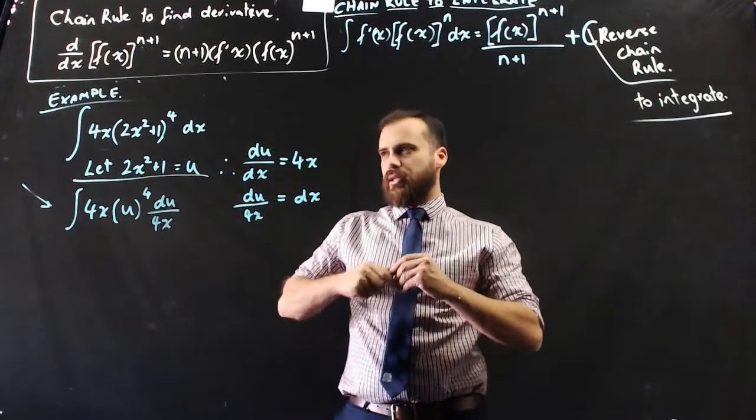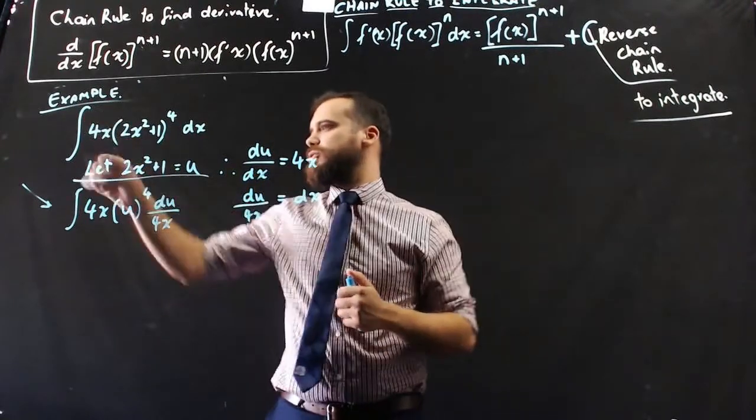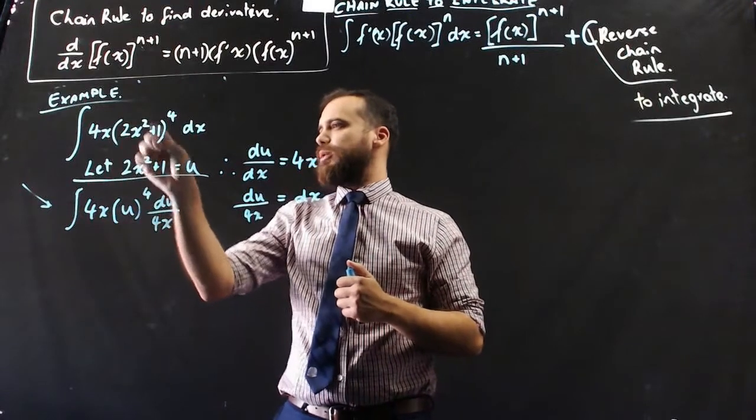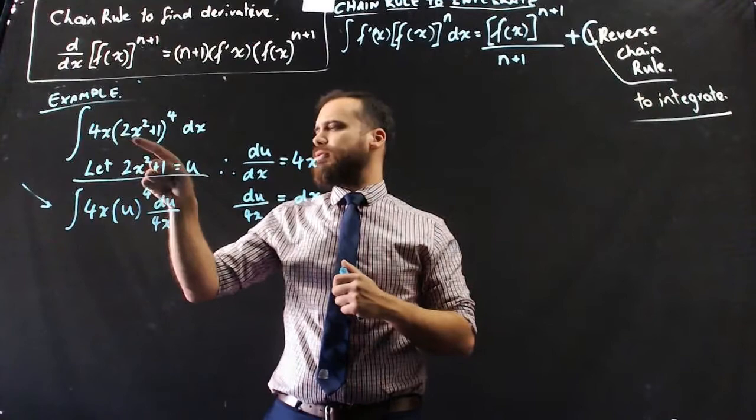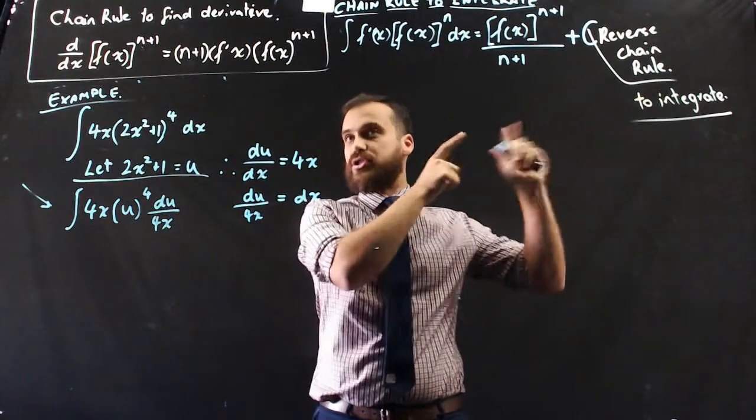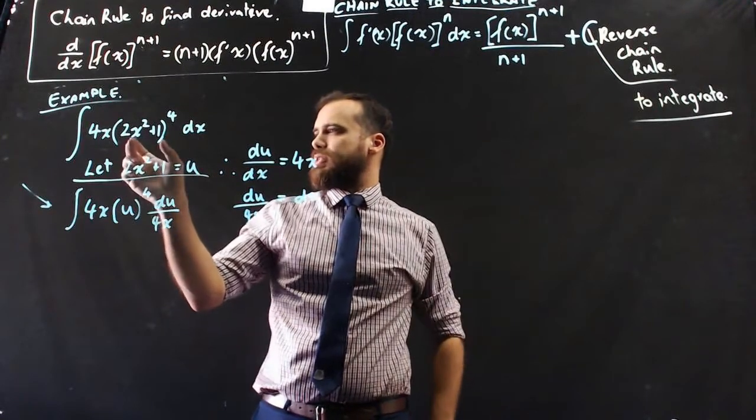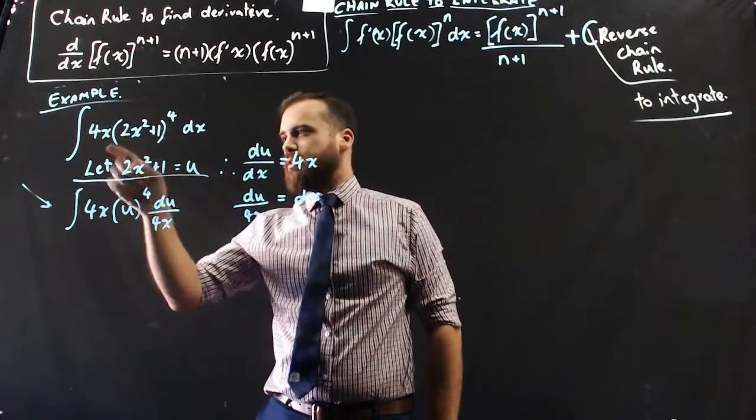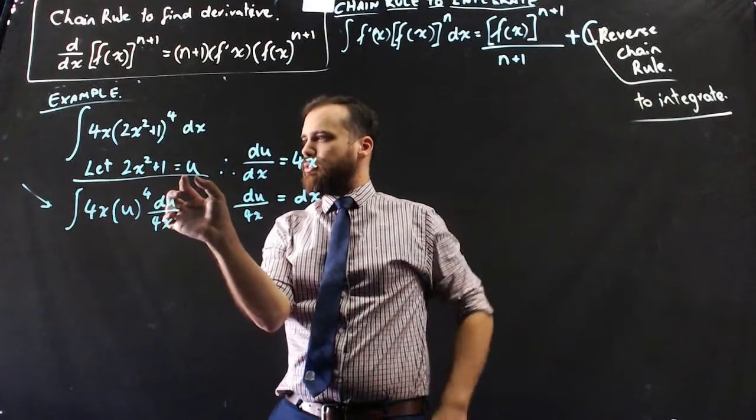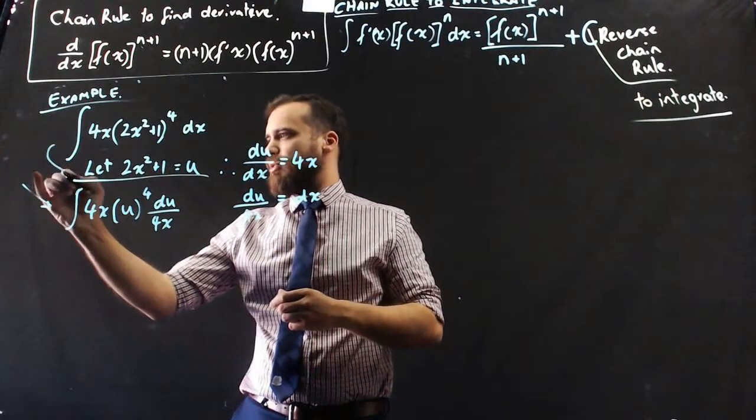Alright, so let's take a look at what we've done here. The integral of 4x bracket 2x squared plus 1 to the 4, you immediately think to yourself, wait, that's the derivative of that, so I can use my reverse chain rule. So, I'm going to take this one here, the one that has the derivative of it, and I'm going to let that equal u. So, there's our first step, step 1.